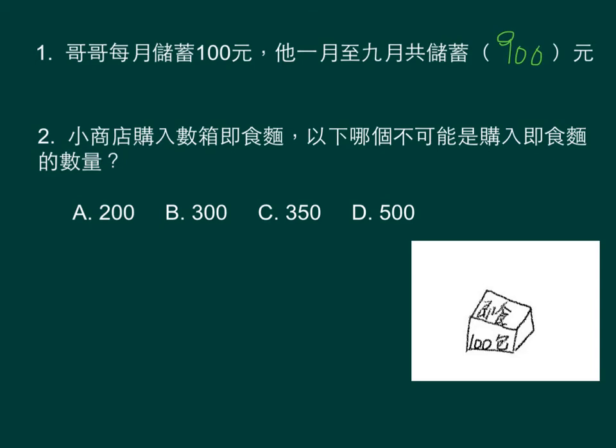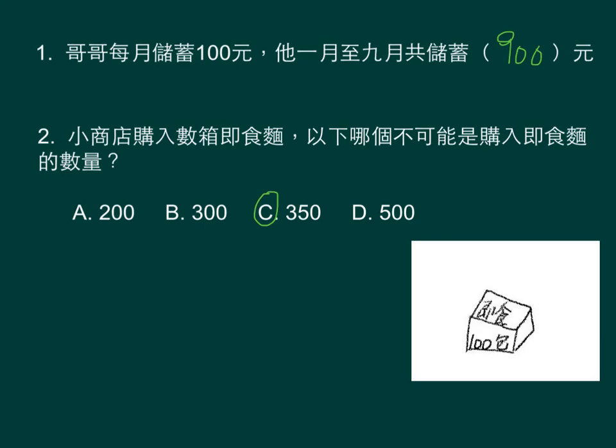练习一：共有多少？第一，九个一百是九百；第二，每一百个一数。个位和十位必定是零，所以答案是C，不可能是三百五十。练习三：每五十个一数，共有多少张圣诞卡呢？